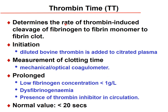The thrombin time determines the rate of thrombin-induced cleavage of fibrinogen to fibrin monomer to form a fibrin clot. It is initiated by adding diluted bovine thrombin to citrated plasma together with calcium, and clotting time is measured using a mechanical or optical coagulometer. A prolonged thrombin time is associated with decreased fibrinogen concentration, fibrinogen abnormality (dysfibrinogenemia), or the presence of thrombin inhibitors in circulation. Normal thrombin time is less than 20 seconds.